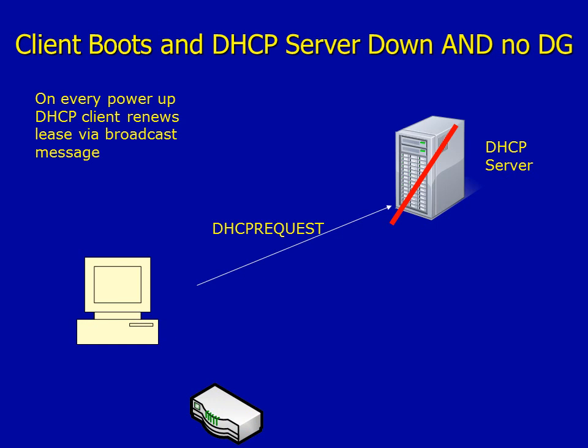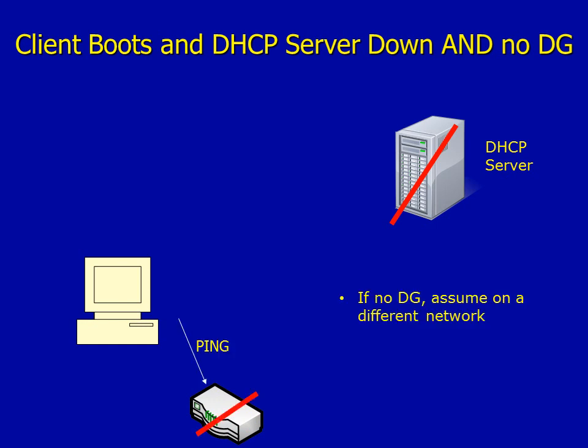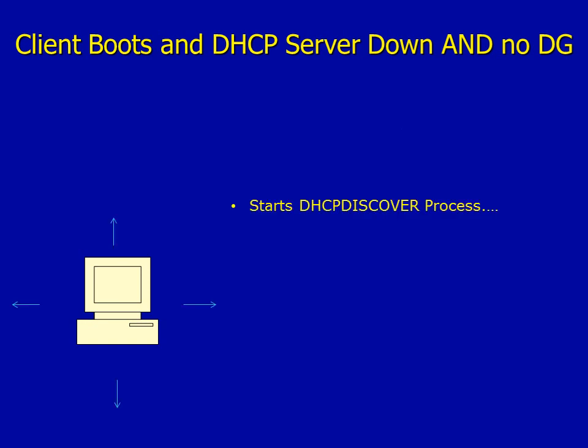Here we have a scenario where the client tries to boot and both the DHCP server and the default gateway are down. A DHCP Request is sent out but nothing happens. The client then pings the default gateway and again receives no reply. At this stage the client assumes it's on a different network and gives up.